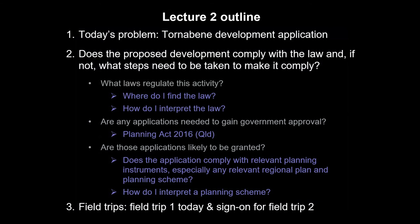Within that broad question we're going to unpack three subsidiary questions: what laws regulate this activity, are there any applications needed to gain government approval, and are those applications likely to be granted. For the first question — what laws regulate the activity — we're going to ask where do I find the law and how to interpret it. For the applications question, I'm going to focus on the Planning Act and particularly the triggers under the planning scheme — the local government planning scheme. We'll find it requires approval, assess it against the planning scheme, and find that it complies and is therefore likely to be approved.